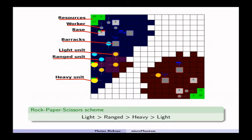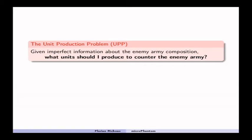So knowing this rock-paper-scissors scheme and knowing also that you have a fog of war preventing players to have full complete information about the game state, there is this very challenging problem within Micro RTS, the unit production problem or UPP.